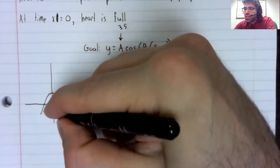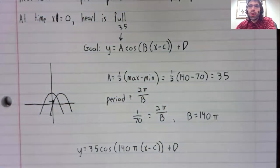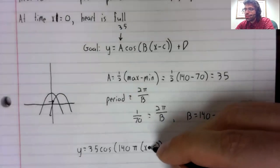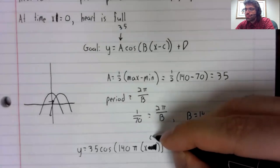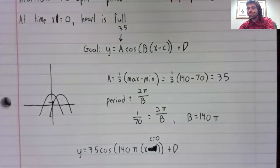You don't want to shift the cosine horizontally. If you shifted this horizontally, our maximum wouldn't be where it's supposed to be. So there is no phase shift. C equals zero.